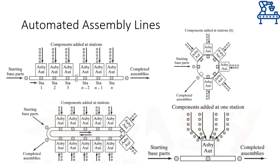These schematics show various system configurations that are used for assembly lines. Note the presence of the part feeding mechanism present on one side of the workstation and the base work unit present on the other side.